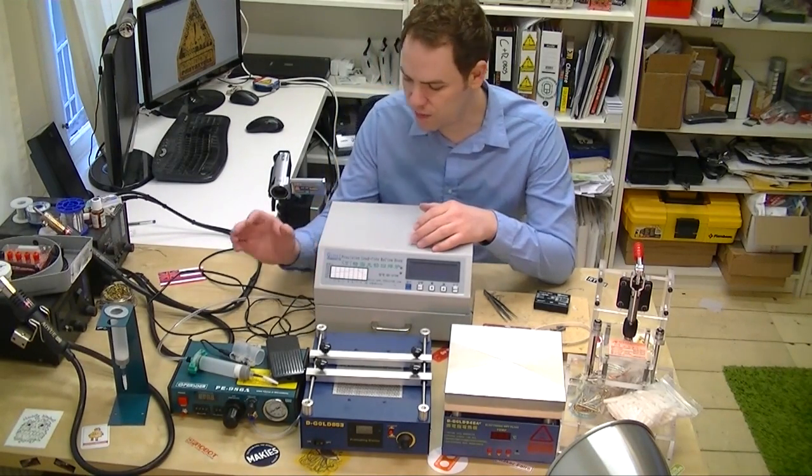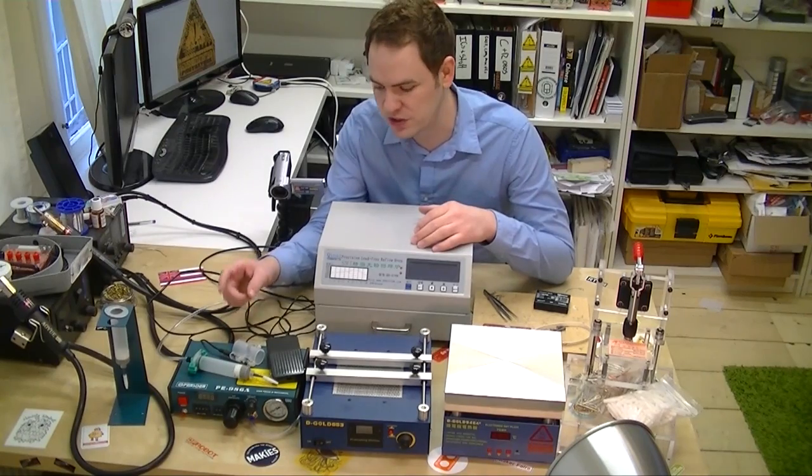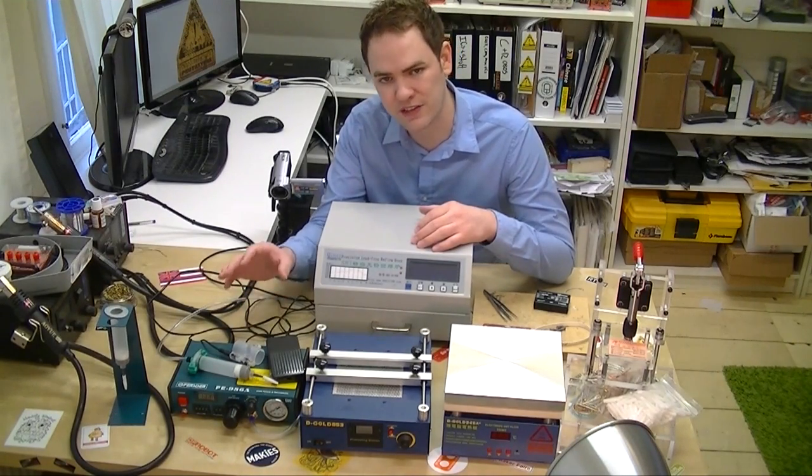So, we start with the beginning, which is a solder paste dispenser. This will shoot out solder onto a circuit board. This is what we're going to look at today.